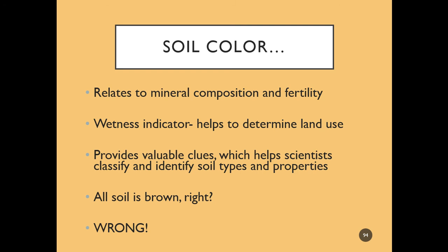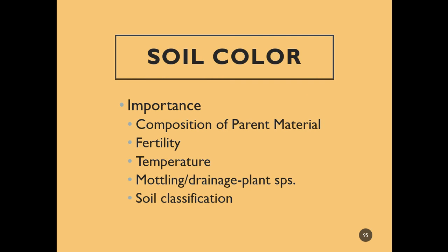When people think of soil, they might think of dirt and think that it's brown and dark. But that assumption is wrong. So soil color's importance — going back to CLORPT — soil color can tell us about the parent material. It is a good indicator of fertility and organic matter, temperature and drainage, and it's also used in soil classification. If you remember back to that video, some of the oxisols versus the mollisols and aridisols, things like that.